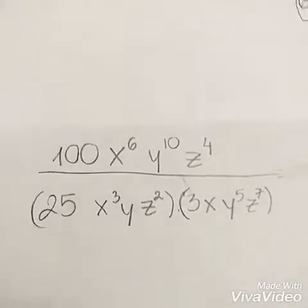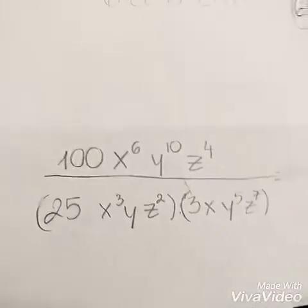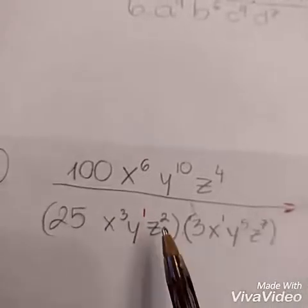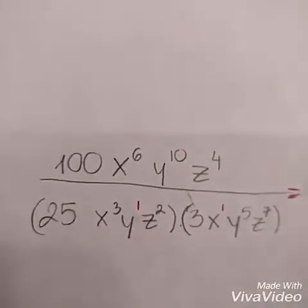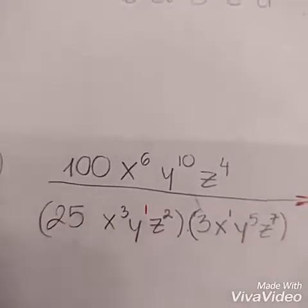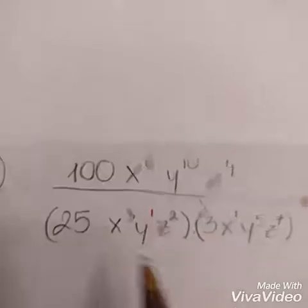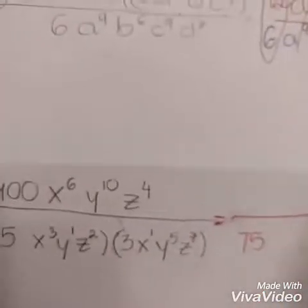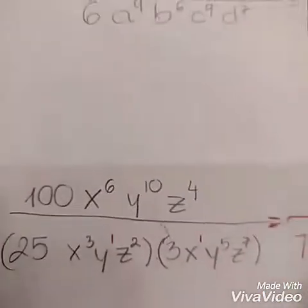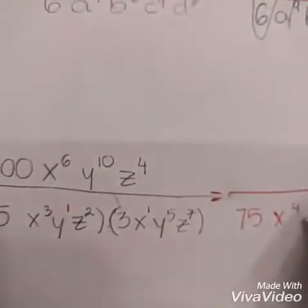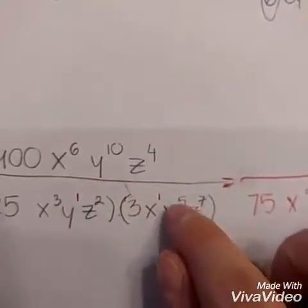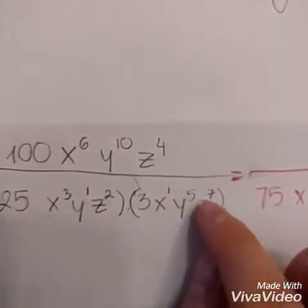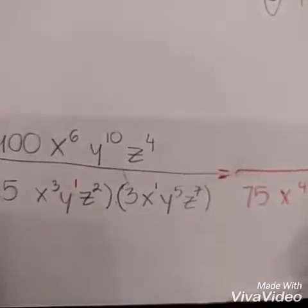Last problem — if you want to pause the video and start on your own, that would be great. On this problem, I want to work with the longer part first, which is the bottom. I'll multiply 25 by 3 to get 75. For X, I add the powers since they're multiplying each other: 3 plus 1 gives 4. For Y: y to the power of 1 times y to the power of 5 — adding the exponent, 1 plus 5 is 6. Z to the power of 2 times z to the 7: 2 plus 7 gives 9.